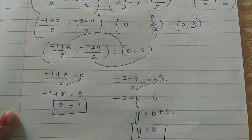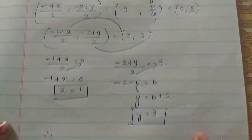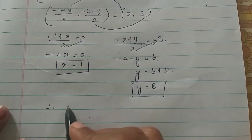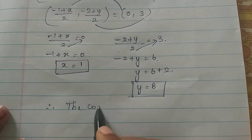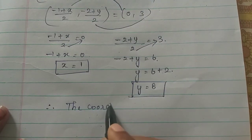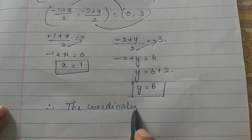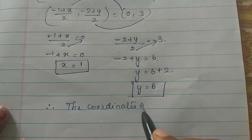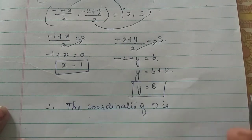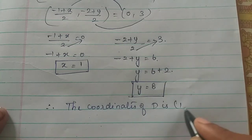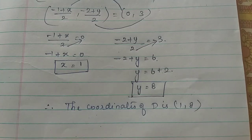Therefore, the coordinates of D are (x, y) = (1, 8). That's all.